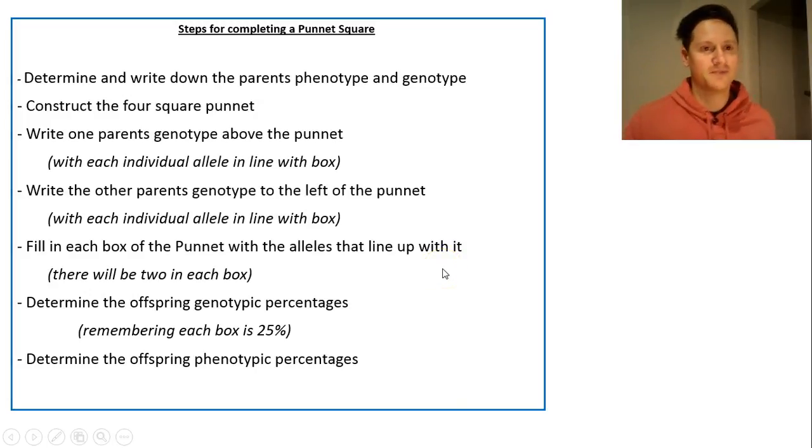When you complete a Punnett square, you have to do these things. First of all, you need to write down and determine the parent's phenotype and genotype. It's essential to have that information before you start, and you usually just get given that information. You construct the four square Punnett, so you draw it up. It might be drawn for you.